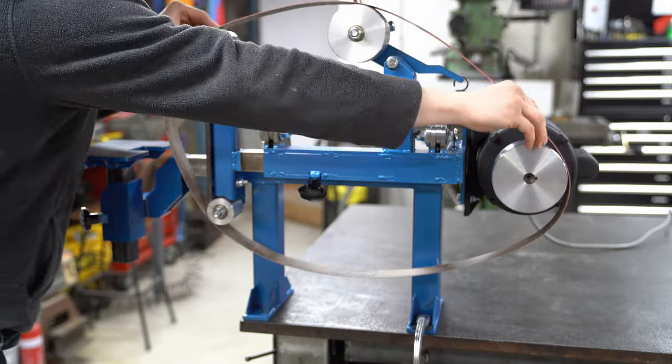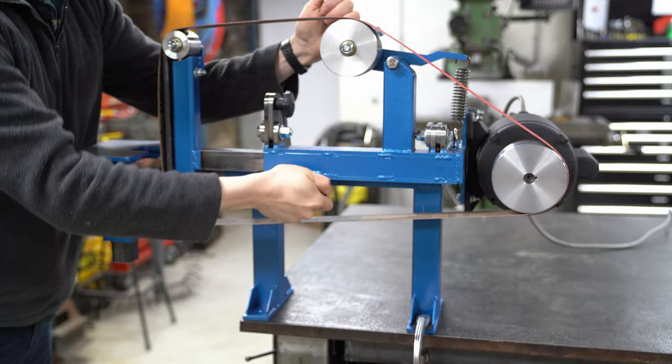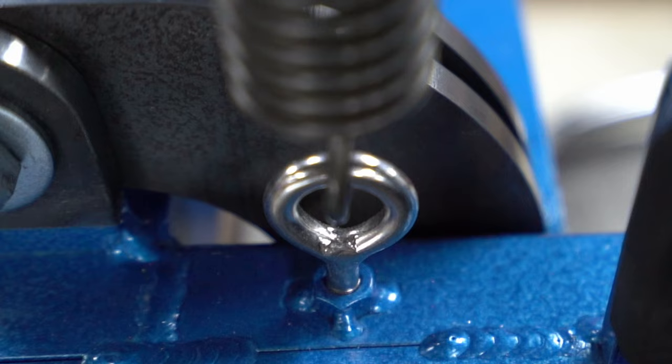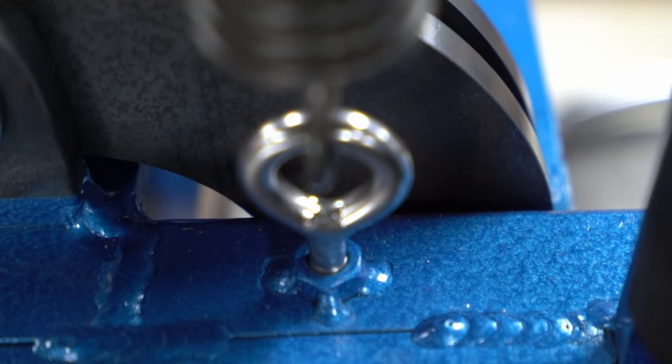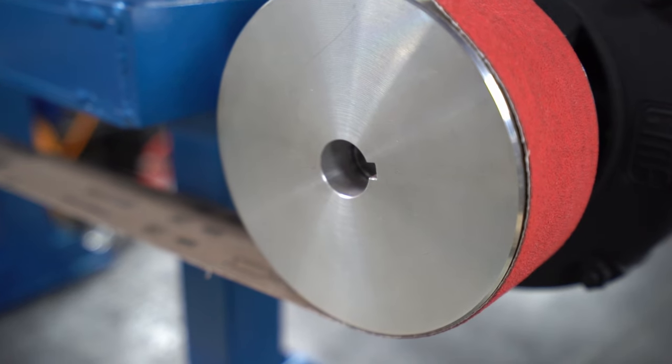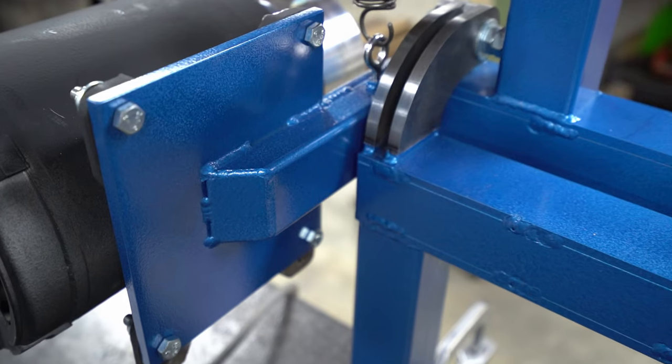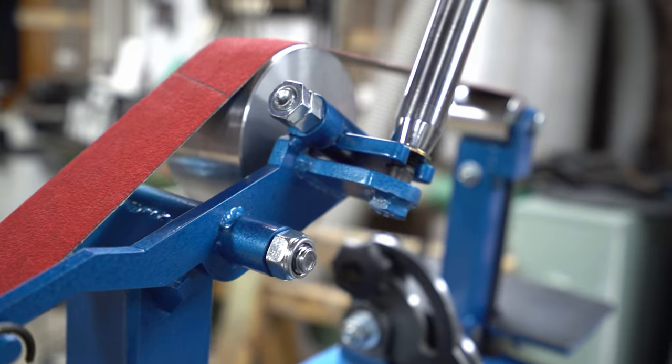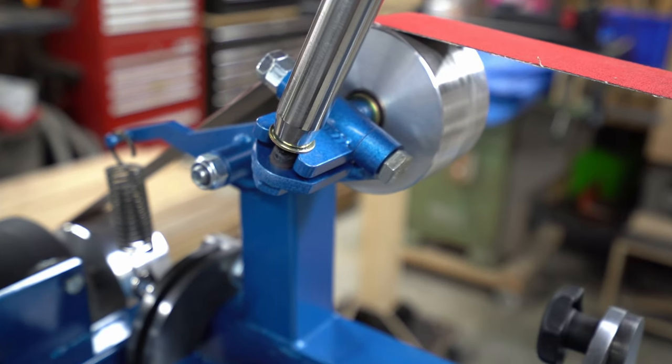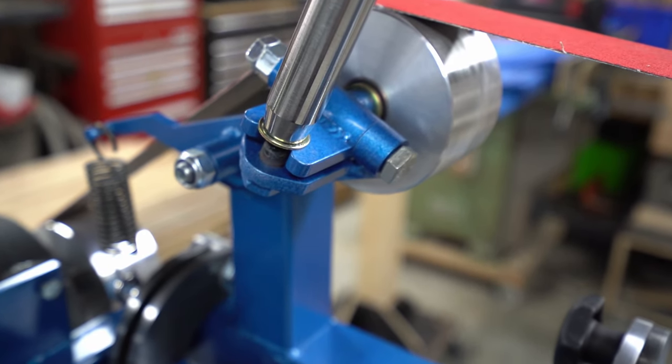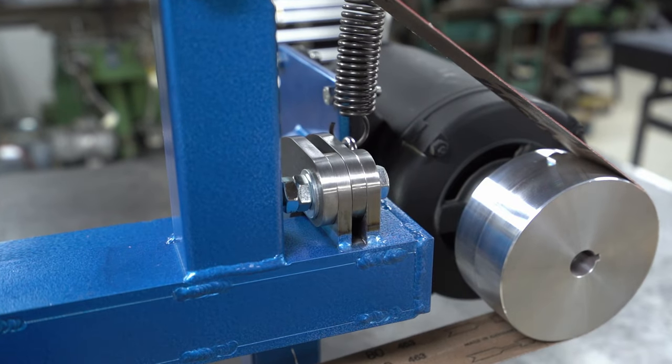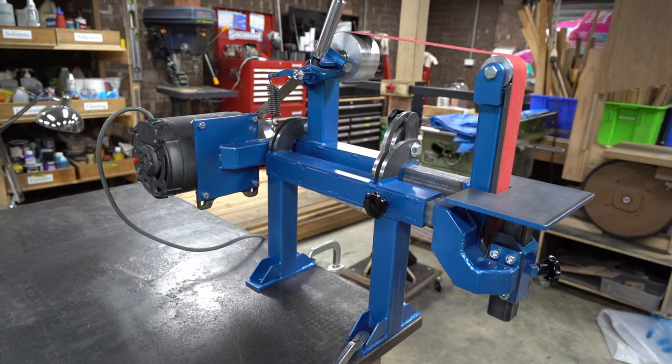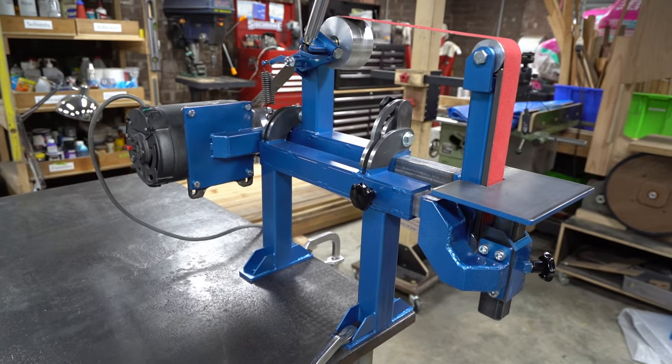The belt I've chosen is a ceramic 80 grit belt. We'll see which ones I end up using but I'm sure over time I'll try a few out. And here are some shots of the assembled machine. There we go, that's the finished unit. The only thing left is a test.